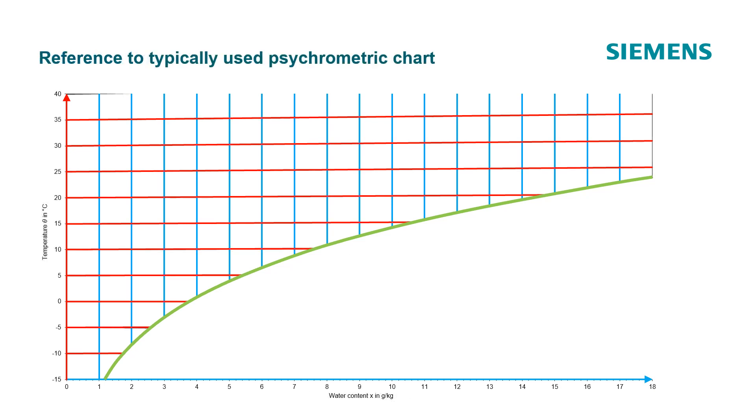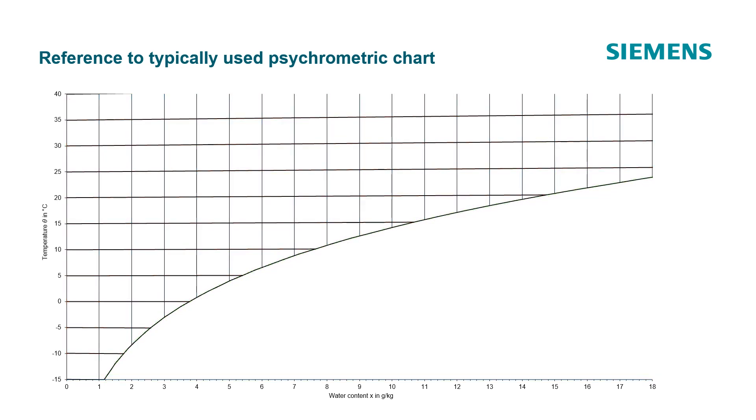In reference to a typically used psychrometric chart, the lines of the schematic representation will be replaced with lines of a commonly used H-X diagram after their respective explanation.